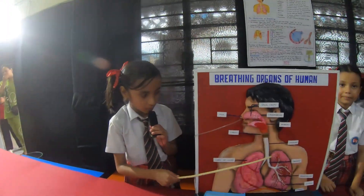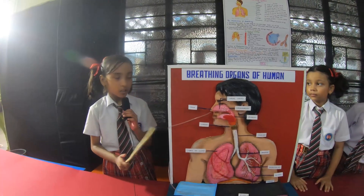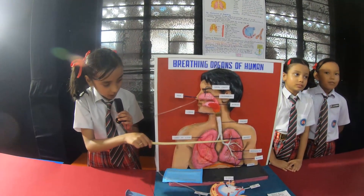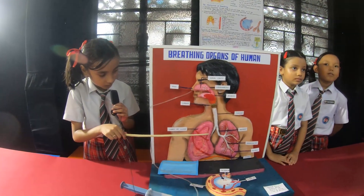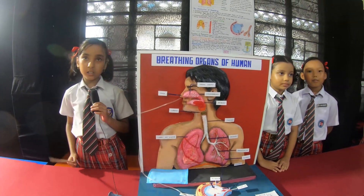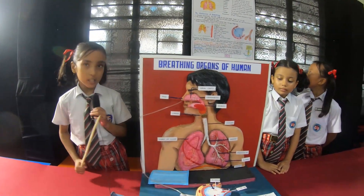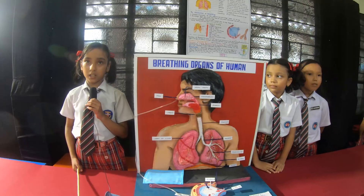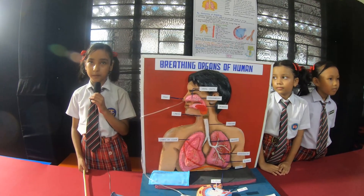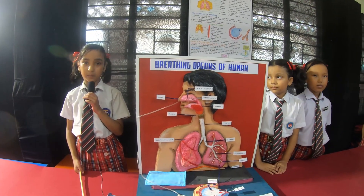The respiratory system is located in the chest. The lungs are the main breathing organs. We have two lungs. The right lung is bigger than the left lung. The lungs are protected inside the ribcage. First, let us understand the structure of the respiratory system.